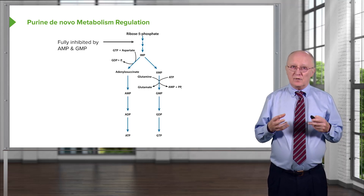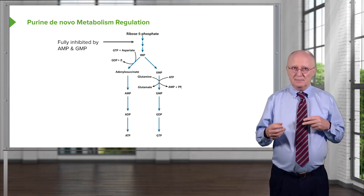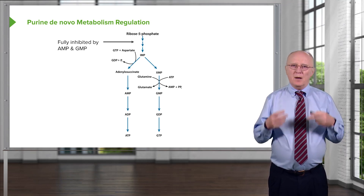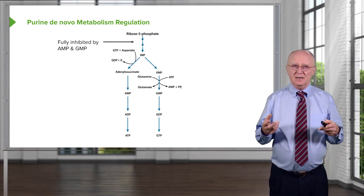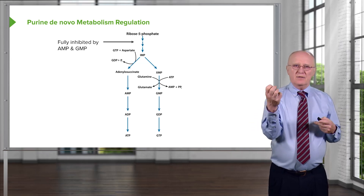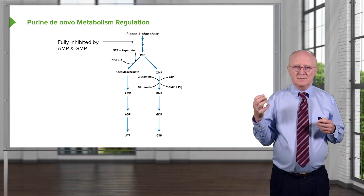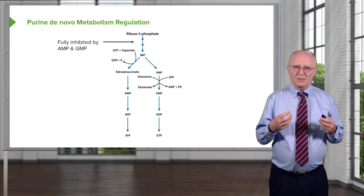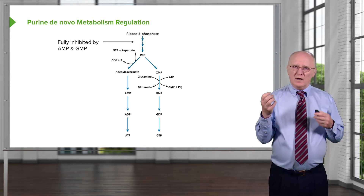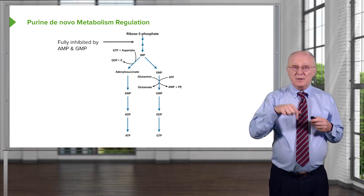PRPP amidotransferase is fully inhibited by AMP and GMP together, but only partially inhibited by either one alone. If the cell has abundant AMP and GMP, there's no reason to run this pathway, so if they're both present in high quantities, they will shut off the enzyme. But if the cell has a lot of AMP but not a lot of GMP, it wouldn't make sense to completely turn the enzyme off because the cell would have no way of making GMP. So in that case, you want to leave the enzyme at least partly active, and shut off synthesis on the AMP side but not the GMP side.